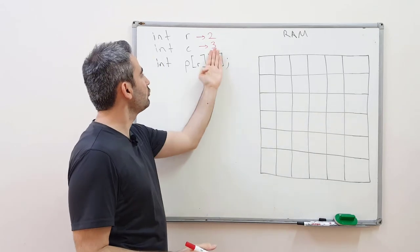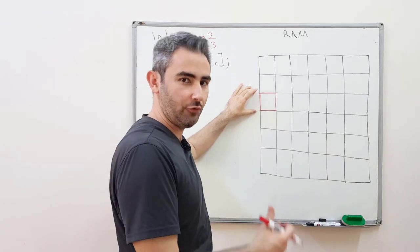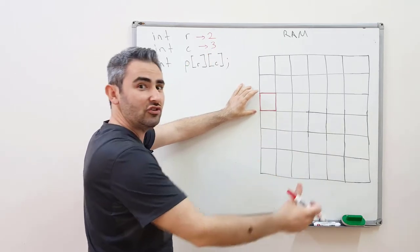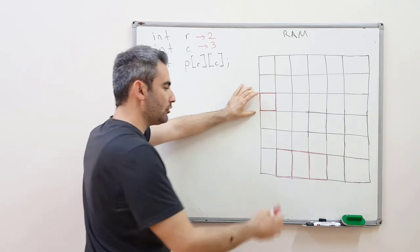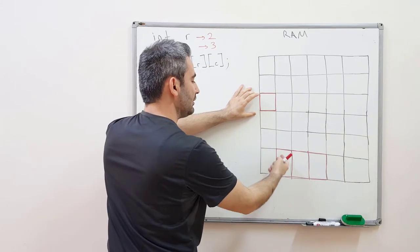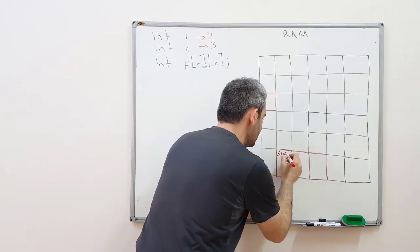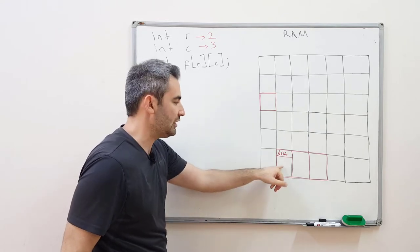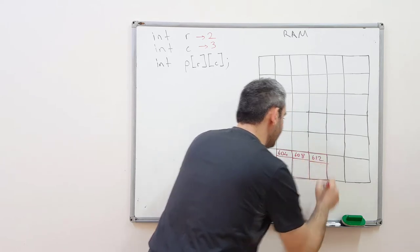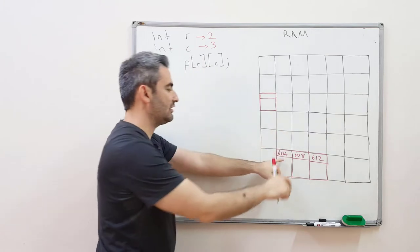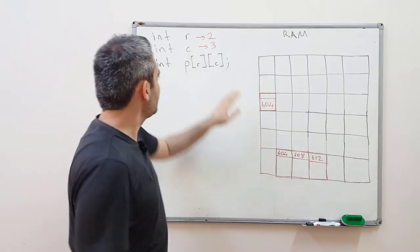Remember how we did it with a one-dimensional array. We created a pointer, defined it first, then allocated space for three integers using malloc. We said malloc, give me 12 bytes, and assigned the starting location of this array to our pointer. Let's assume the address of this first integer is 604, the next is 608, and the last is 612.